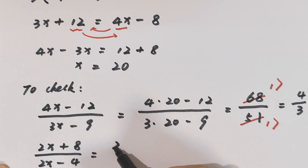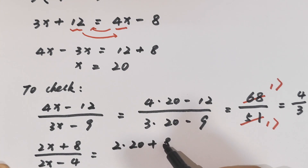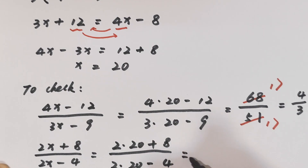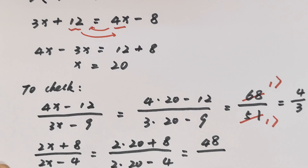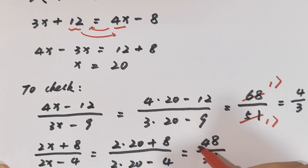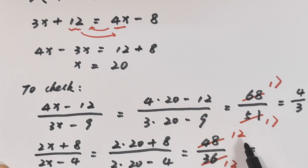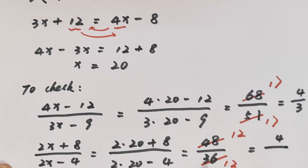When the value of x equals 20, it will be 2 times 20 plus 8 divided by 2 times 20 minus 4. That gives 40 plus 8 equals 48, divided by 40 minus 4 equals 36. Then 48 divided by 12 equals 4, and 36 divided by 12 equals 3. So both sides are equal.